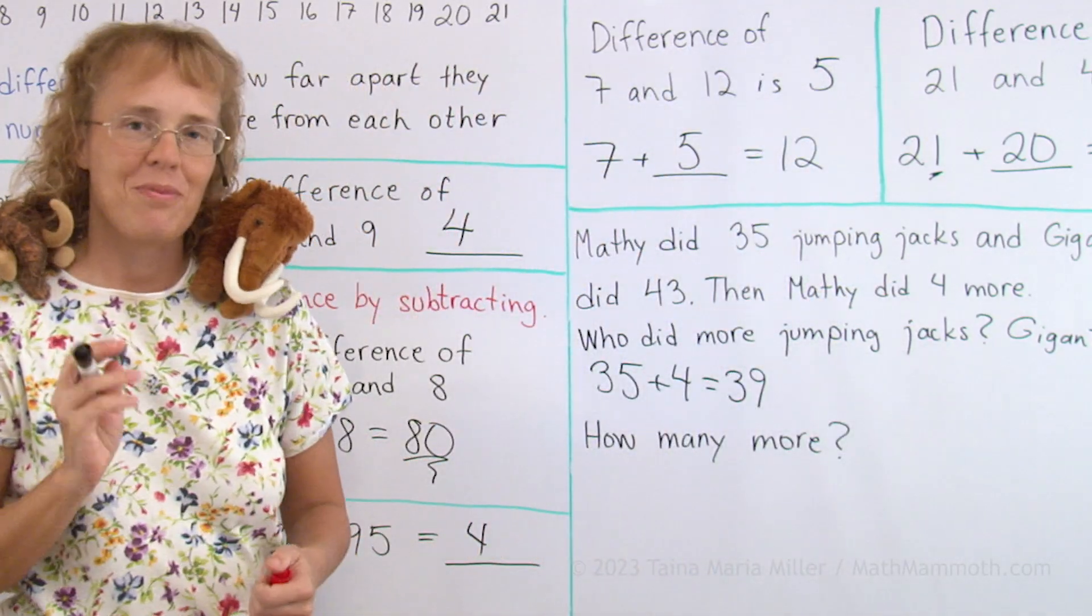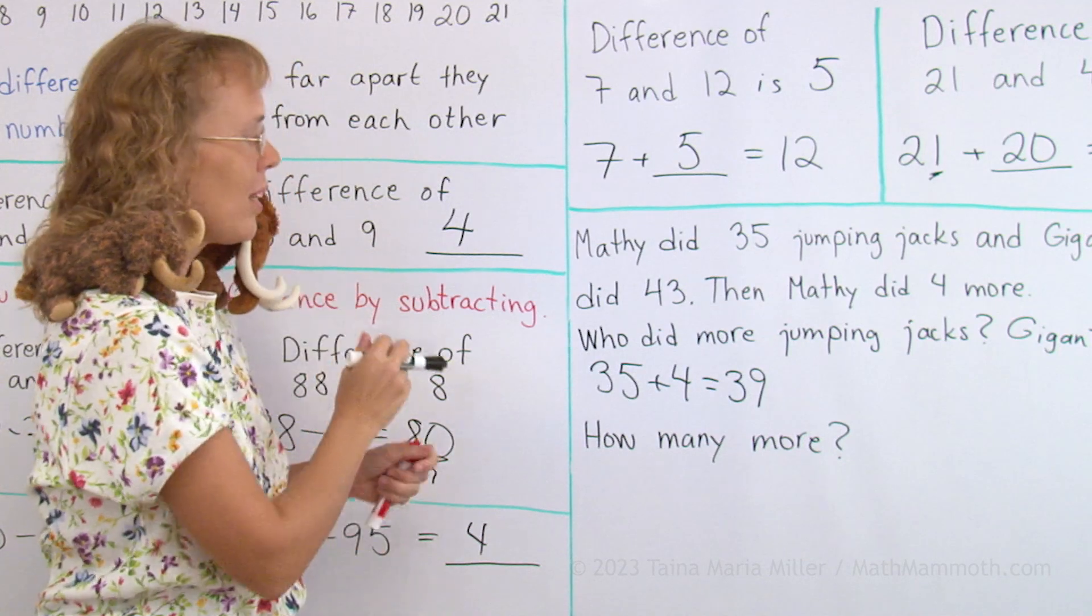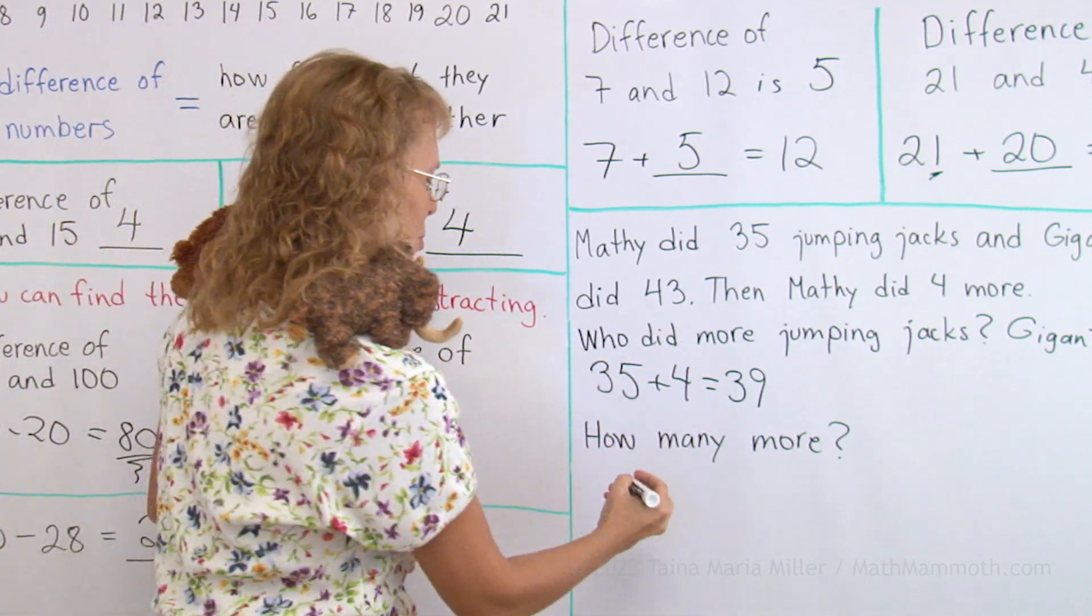How many more? How many more jumping jacks did Giganto do than Mathie? We have 43 and 39. Let me put them here.